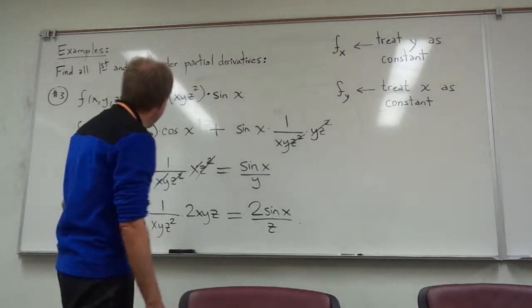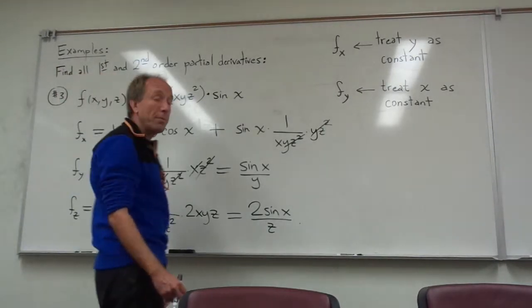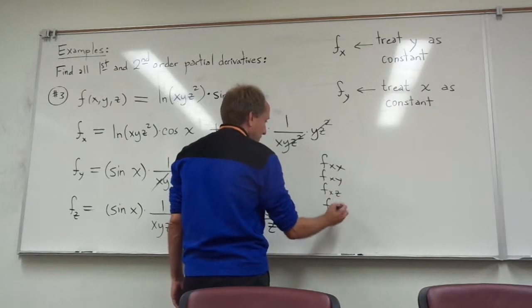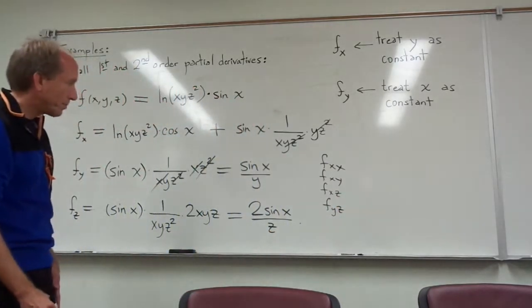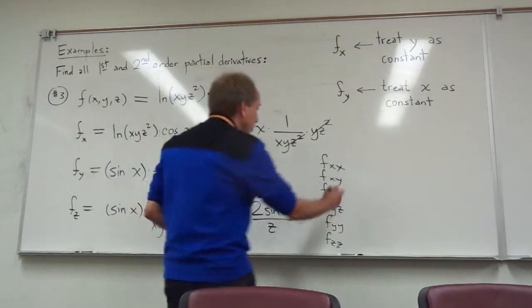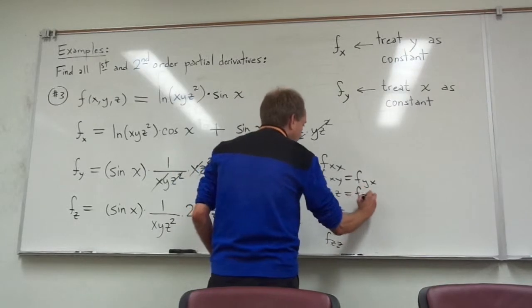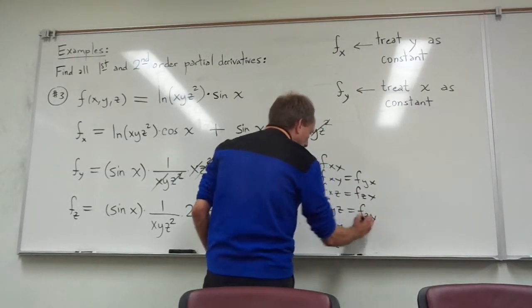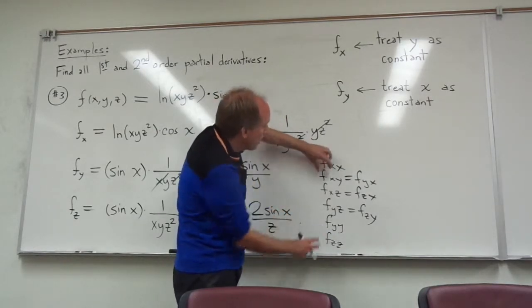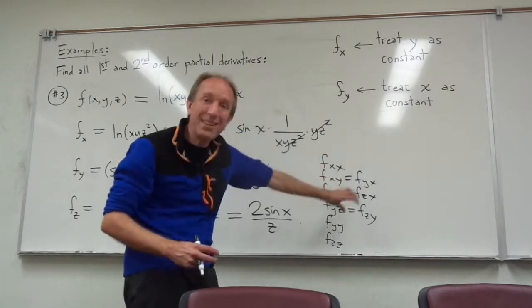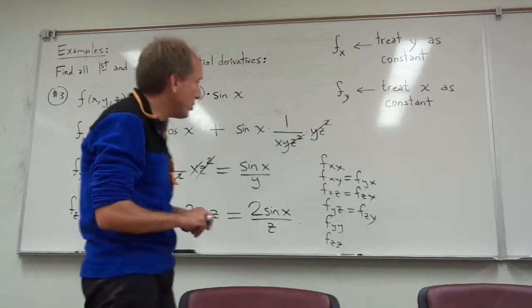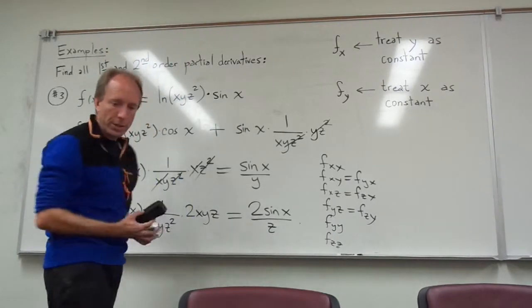For the second-order partials of a three-variable function, there are going to be several to do. You can calculate f_xx, f_xy, f_xz, f_yz, f_yy, and f_zz. All of the mixed partials are equal, so f_yx equals f_xy, f_xz equals f_zx, and so on. So you have three non-mixed second-order partials that all need to be calculated, but for the mixed partials, instead of doing six calculations you only need to do three, since the other three are equal.